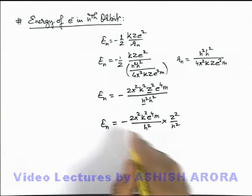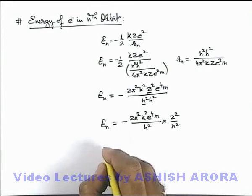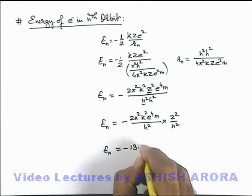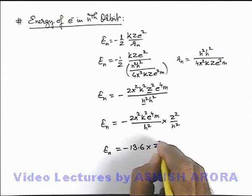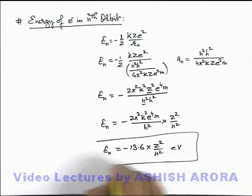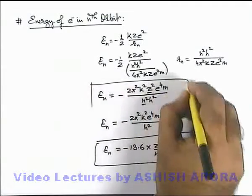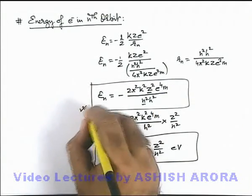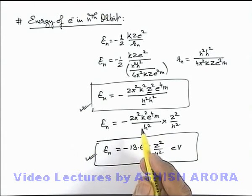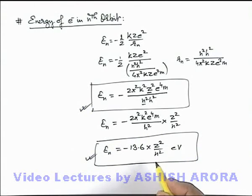If we substitute the value of all constants and we calculate in units of electron volts, here the total energy we'll be getting is minus 13.6 multiplied by z square by n square electron volt. So both of these expressions are useful for you to keep in mind because various numericals we are going to see in coming sections based on these results.